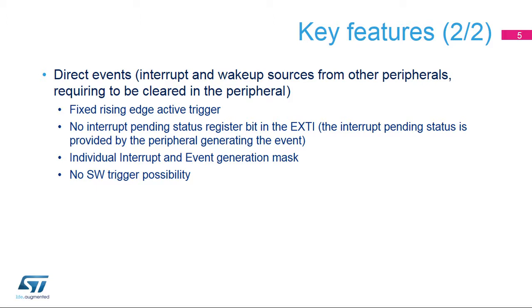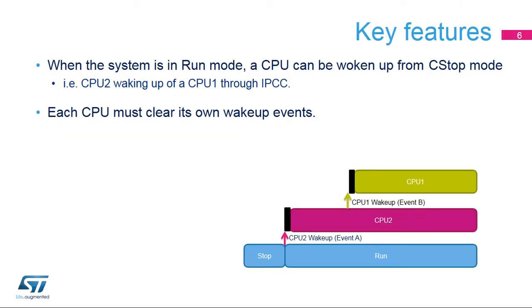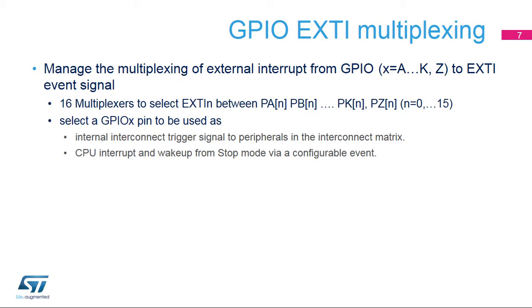Direct events provide an interrupt or event from peripherals having a status flag requiring to be cleared. eXTI wake-up events may be configured to wake up CPU2; configurable events need to be cleared by the corresponding CPU which has been awakened. The external interrupts and event controller allows the selection of GPIOs as sources of interrupts or wake-up events.